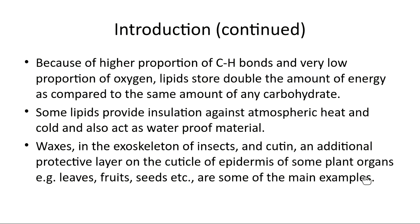Some of the main examples: waxes are present on the exoskeleton of insects to protect them from predators. Some insects release waxes on their exoskeleton for protection. The epidermis of some plant organs such as leaves, fruits, and seeds also possess a layer of waxes for protection. We will study waxes in detail in a later section.